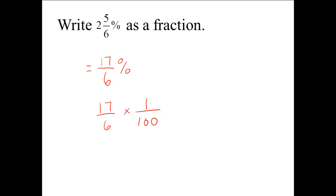We have a 17 and a 1 in the numerator, and there are no common factors with 17 in either denominator. So we multiply the numerators together and get 17, and the denominators together and get 600. We can't divide out any other factors, so our answer is 17 over 600. So 2 and 5 sixths percent is equal to 17 over 600.